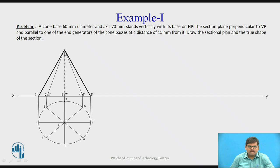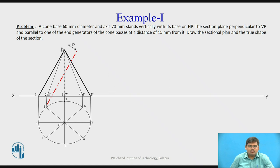Apex to 1-dash is one generator; apex to 2-8-dash is another generator, and so on. The cutting plane is parallel to either the 1-dash generator or the 5-dash generator, since the end generators in this view are O-1-dash and O-5-dash. So our cutting plane will be parallel to either one of these. The cutting plane should be 15 mm from O-1-dash. This is the section plane which cuts the cone resting on HP.